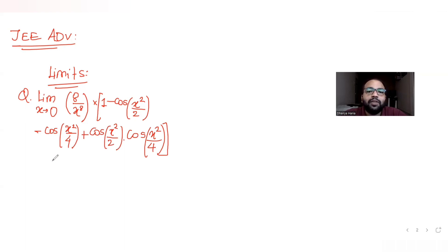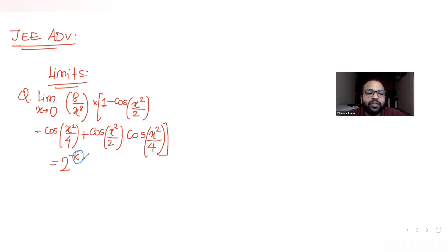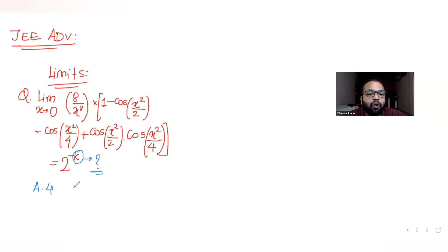We are given that this limit is equal to 2 raised to minus k, and we need to find the value of k. The four options given are: A is 4, B is minus 4, C is plus 5, D is minus 5.